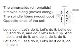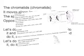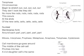Telophase — chromosomes begin to stretch out. They don't look like they did. This occurs at the end of the new cells. Nuclear membranes form around each nucleus.